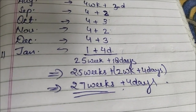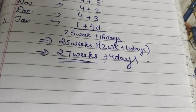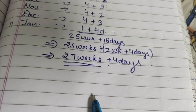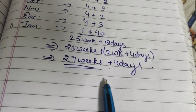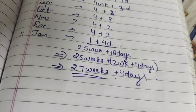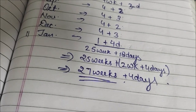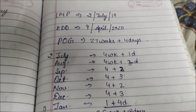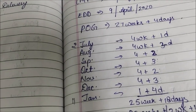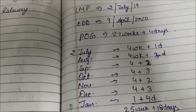After converting, 25 weeks and 18 days comes out to 27 weeks and 4 days. So this is the period of gestation. Thank you.